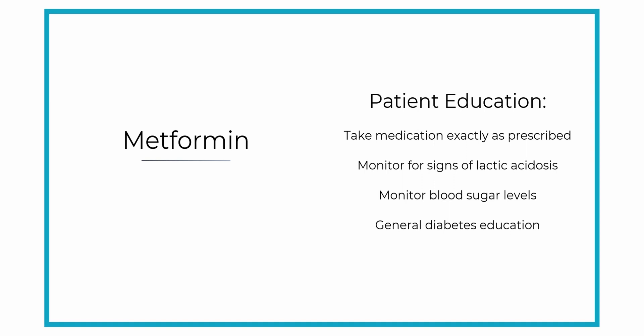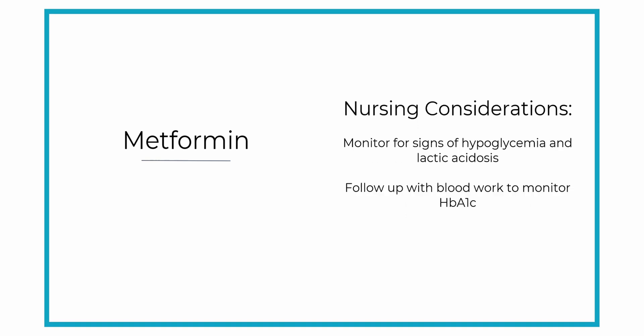General diabetes management includes regularly checking their blood glucose levels, urine ketones, eating a balanced diet, and exercising regularly. For nursing considerations, be sure to monitor your patient for signs of lactic acidosis and hypoglycemia, and make sure your patient is doing proper follow-up with their blood work to monitor their hemoglobin A1c levels for long-term blood sugar control.